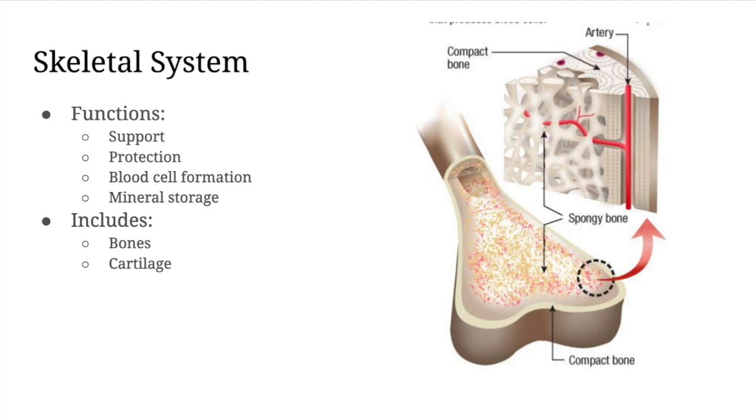There to help cushion and keep them from rubbing against each other. Our skeletal system functions to support, so it helps keep our body upright. Our muscles attach to and pull on our bones that let us move.